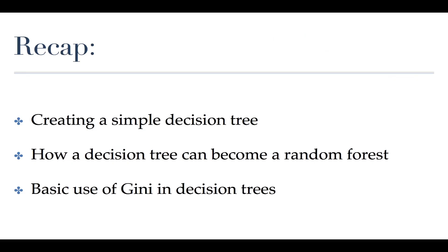In the next class we're going to show you a little more code about how that works. So to recap: we talked about the process of building a decision tree and how it becomes a random forest model, using golf as a simple example, and how to calculate the Gini coefficient for a decision node. In our next coding section we'll create that graph using the iris dataset, and in the subsequent chapter we'll show you how to calculate feature importance in random forests — something unique and powerful that not all machine learning models offer. Thanks very much and see you in the coding section!